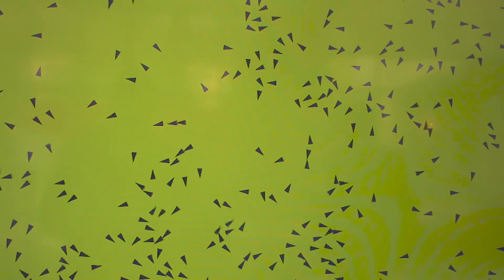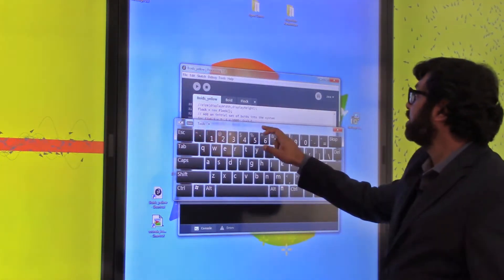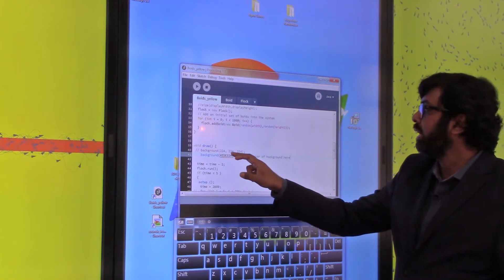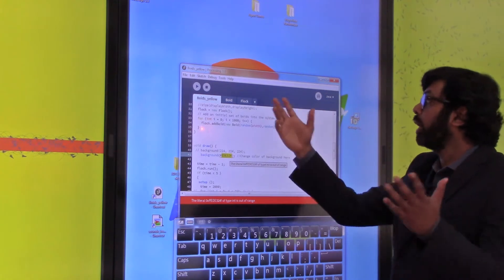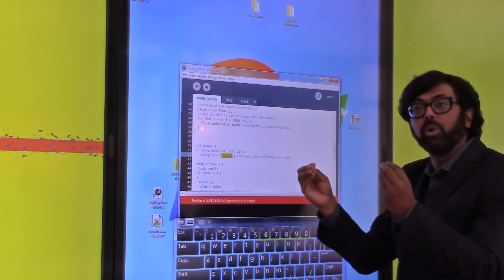And the way we have designed these simulations is not only to allow for interactions that are touch based on the screen, but they also allow you to make deeper changes to the code that produces these simulations. For example, with very simple commands, I can just change the background color here and it will become something completely different. Or I could change how the little boids are interacting with one another.